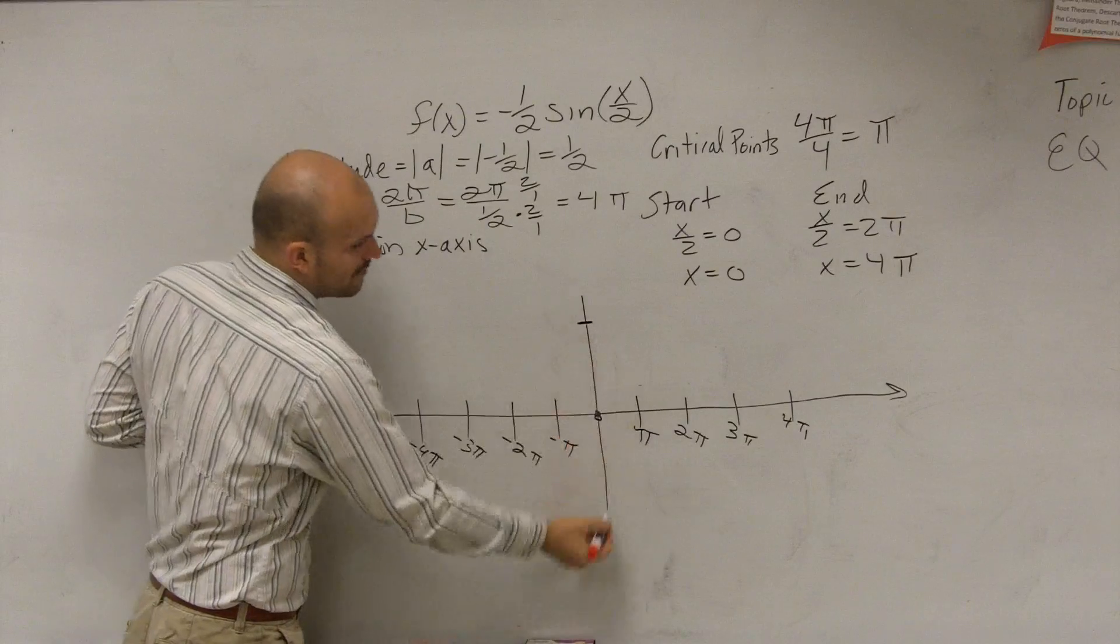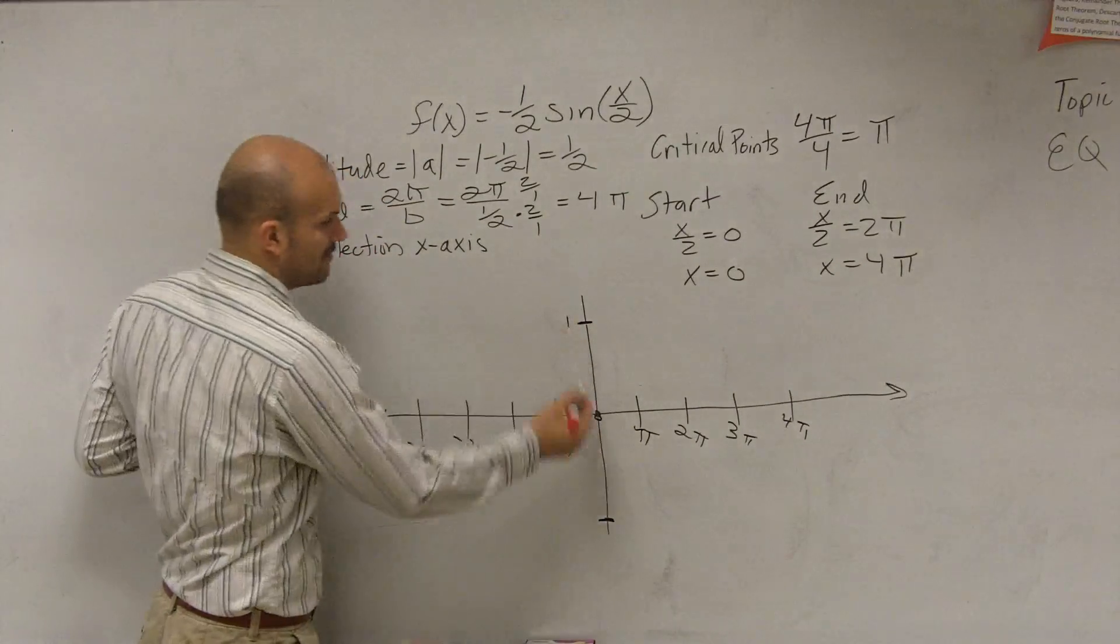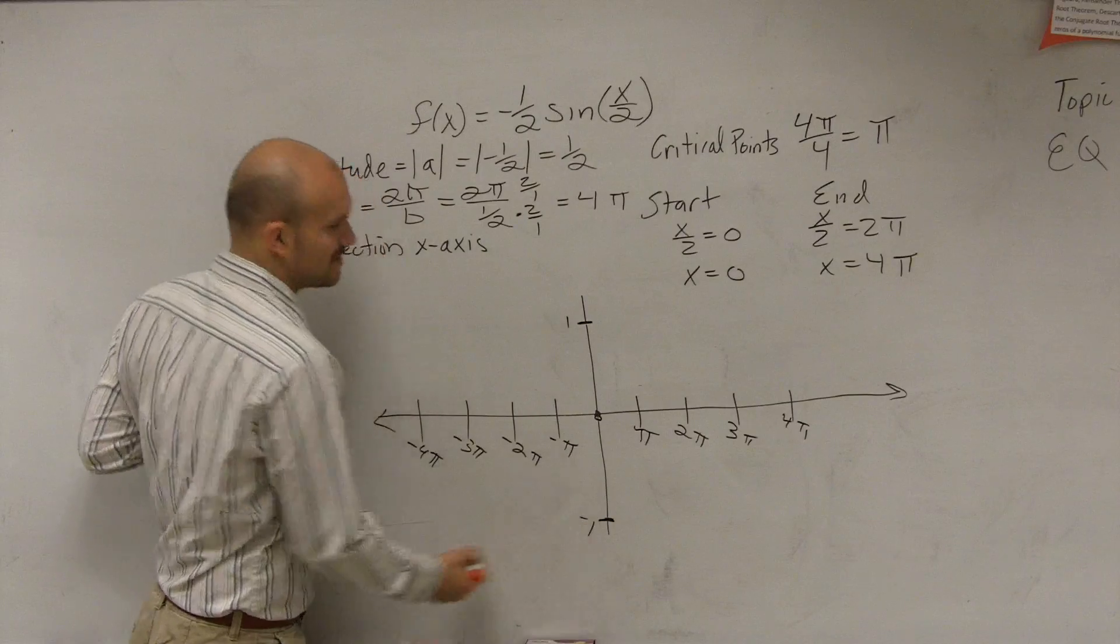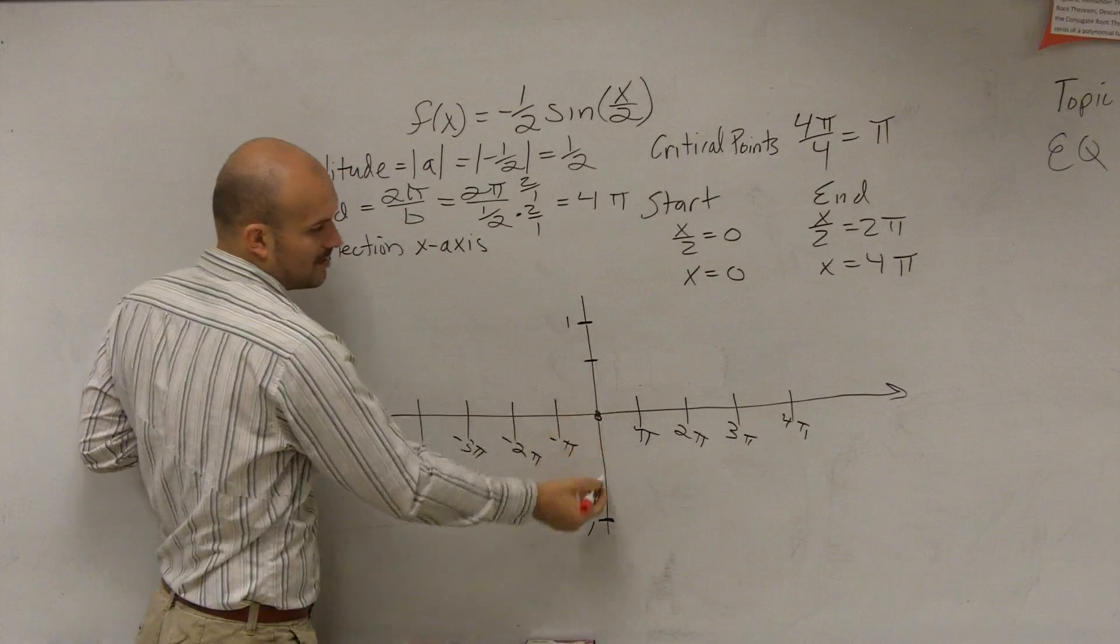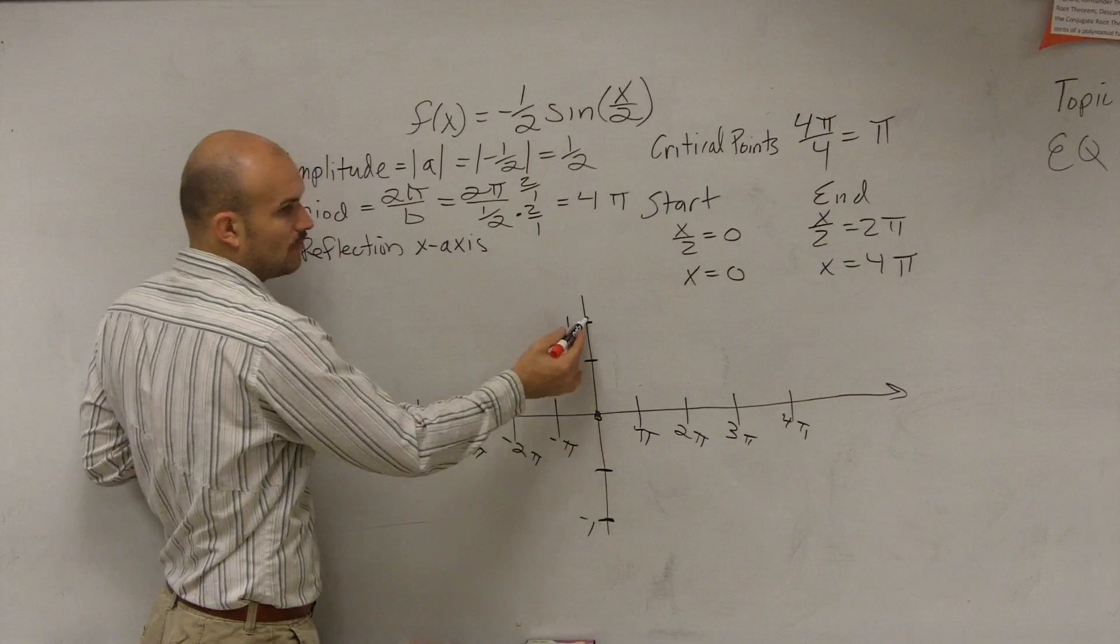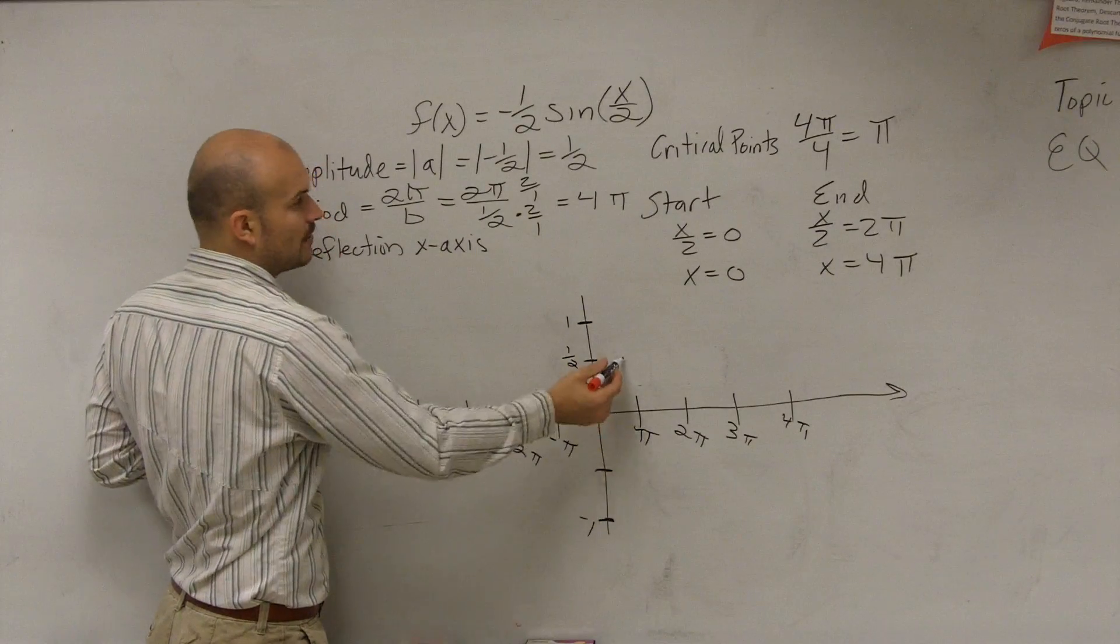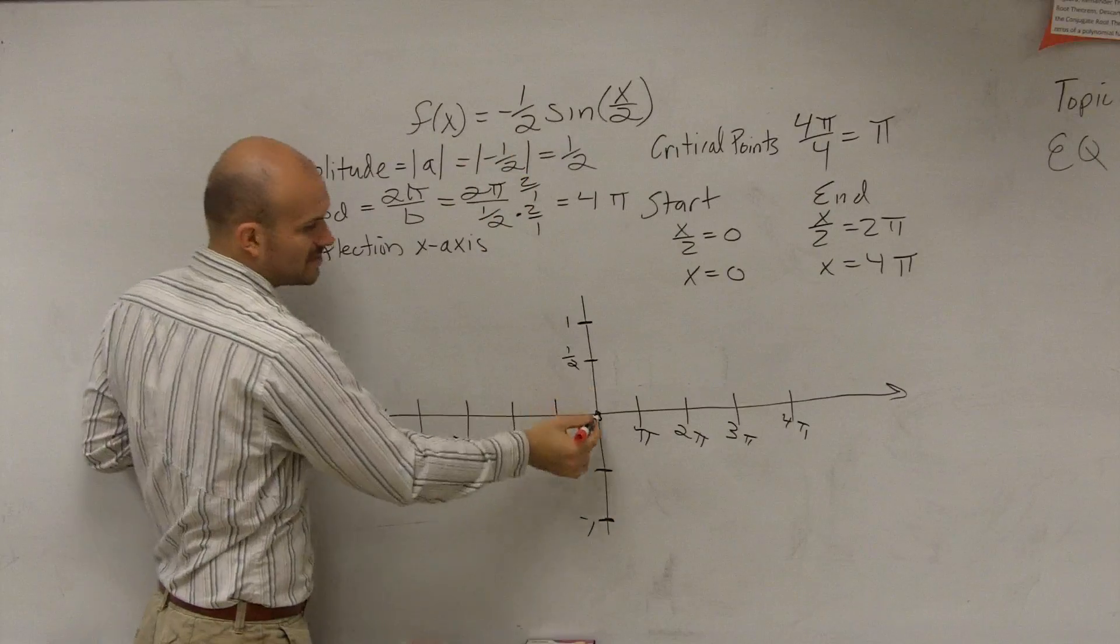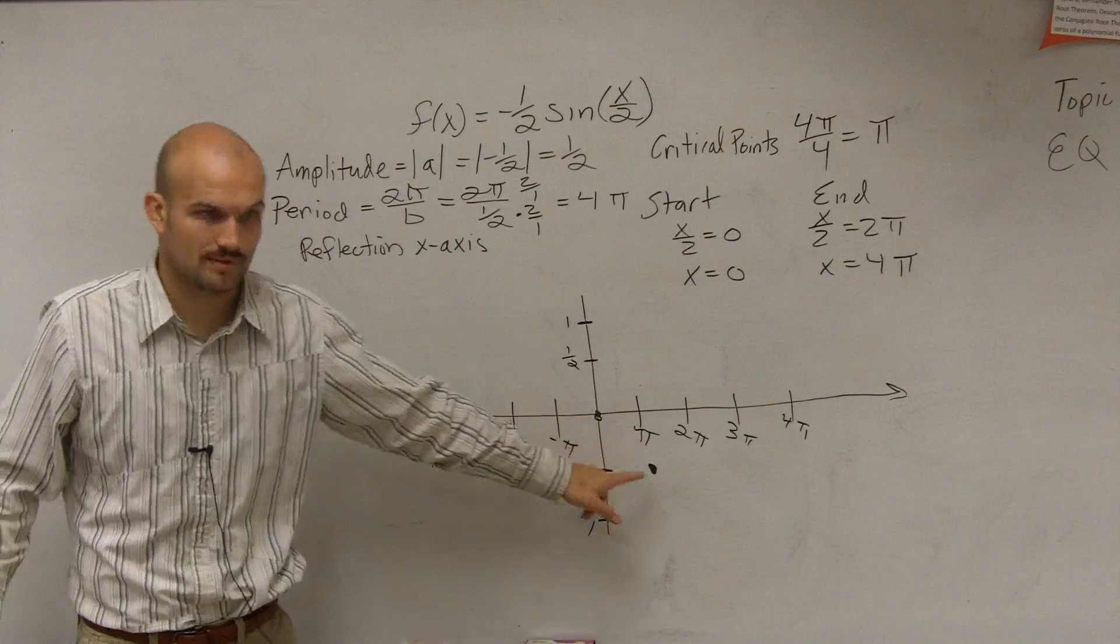Now, the next thing is, if you remember the amplitude of the parent graph was one and negative one, right? We said it went up one and went down to negative one. However, this graph's amplitude is one half. So all you're going to do is, rather than going up to one, you're going to go up to one half. So rather than going up, though, since this is the reflection, we're going to go down. So the first critical point is going to be the minimum.